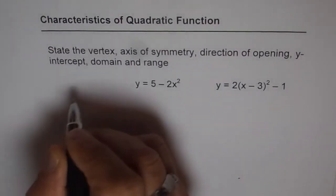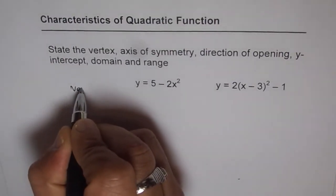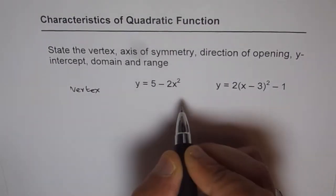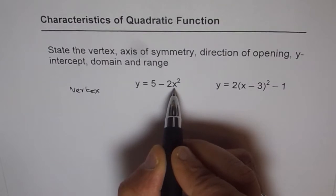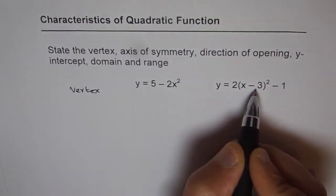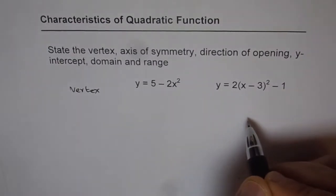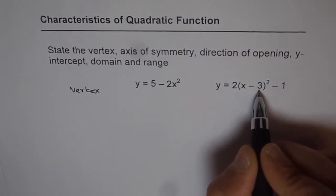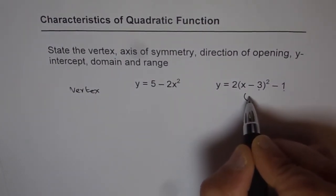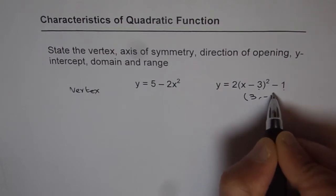Now these are vertex form and so it is very simple to write vertex from the given equation. Let me start from this place, this becomes obvious then. Here the vertex is 3 and minus 1. So vertex coordinates are 3 and minus 1.